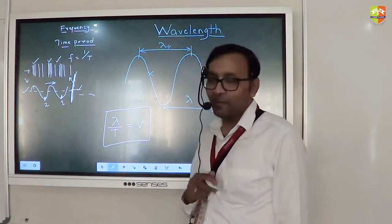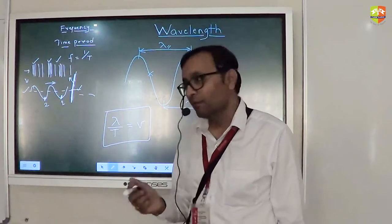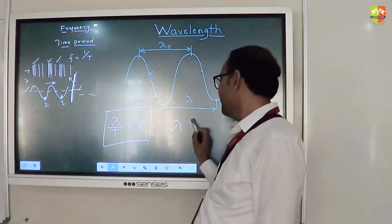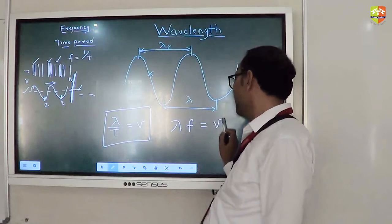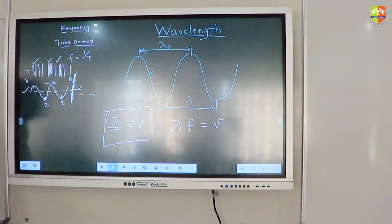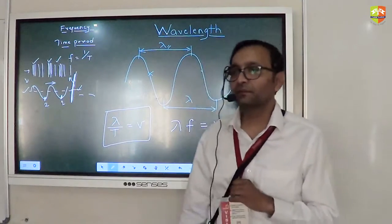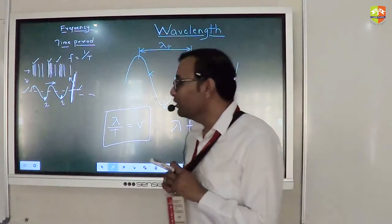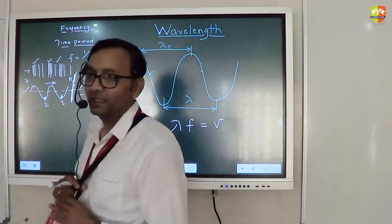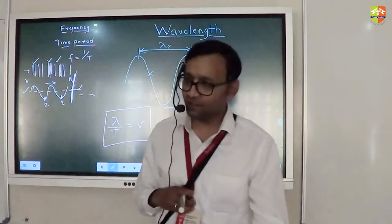By the way, one by time period is what? Frequency. So I can also say lambda into frequency is the velocity. Any doubts till now? What do you think the SI unit of wavelength is? It's a length? Meters.